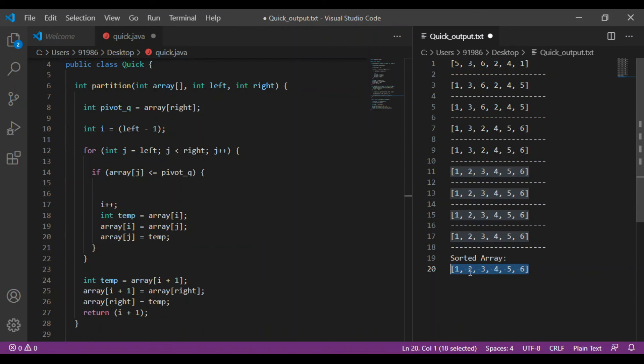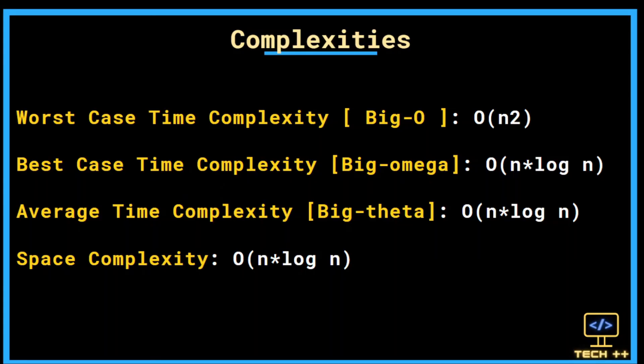You can find the detailed notes for Quicksort and its code in the description box below. Let's discuss the complexities of the Quicksort algorithm. Worst case time complexity is O(n²). Best case time complexity is O(n log n), which occurs when partitioning leads to almost equal subarrays. Average time complexity is O(n log n) and space complexity is also O(n log n).